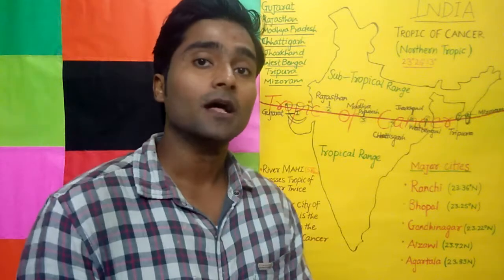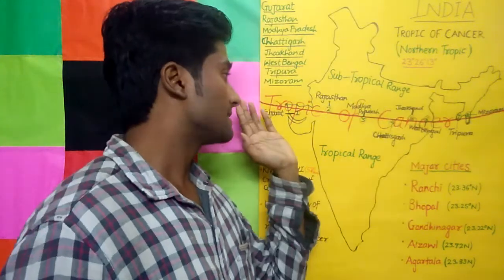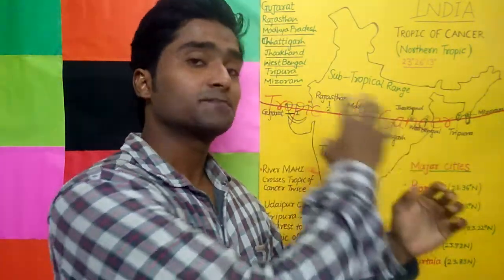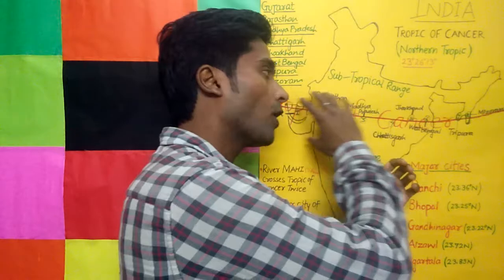The Tropic of Cancer is also called the Northern Tropic. It is the parallel of latitude north of the equator at approximately 23 and a half degrees. In India, it passes through almost the central part of the country.